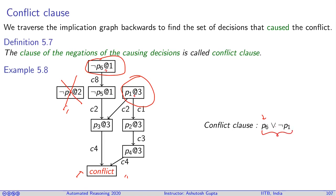First try to understand the mechanical part of it. First you take the conflict node, traverse backwards, reach the leaves and collect the decisions. You get not p6 and p1. Not every decision will be reachable back from the conflict node. Then you flip the sign. So not p6 becomes p6, p1 becomes not p1, and take their disjunction. This is called the conflict clause.